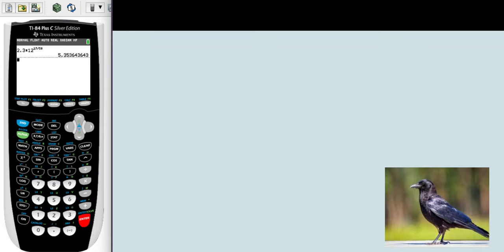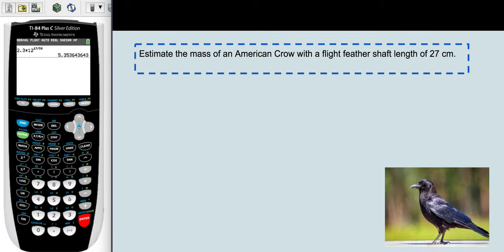Let's try another one for the American crow. Estimate the mass of an American crow with a flight feather shaft length of 27 centimeters. You're looking for the mass this time, and you're given the shaft length. This means that you're looking for the input, but you're given the output.